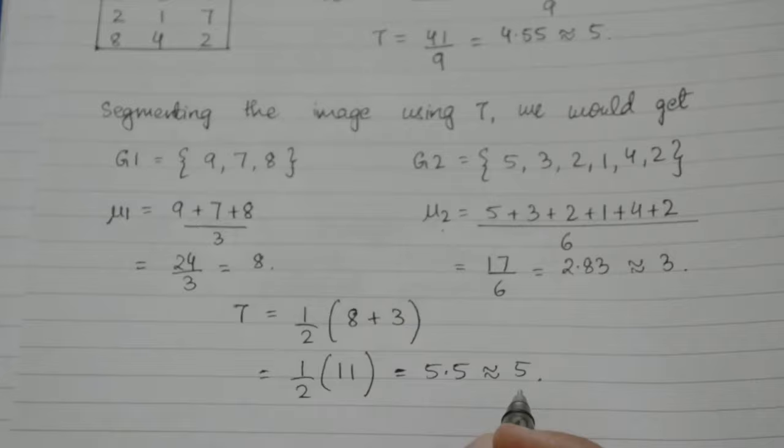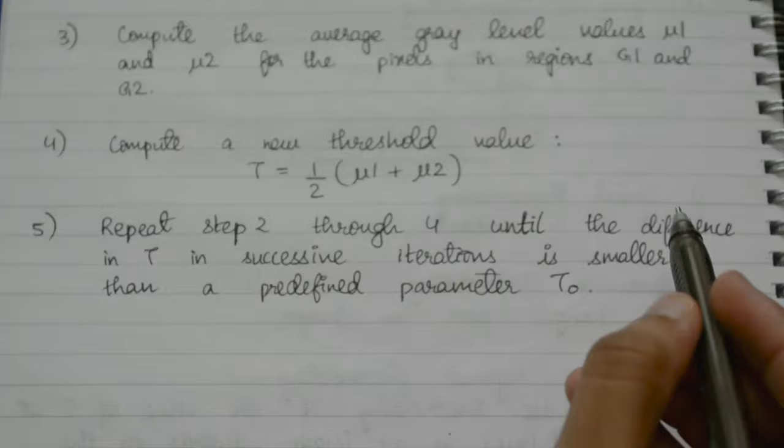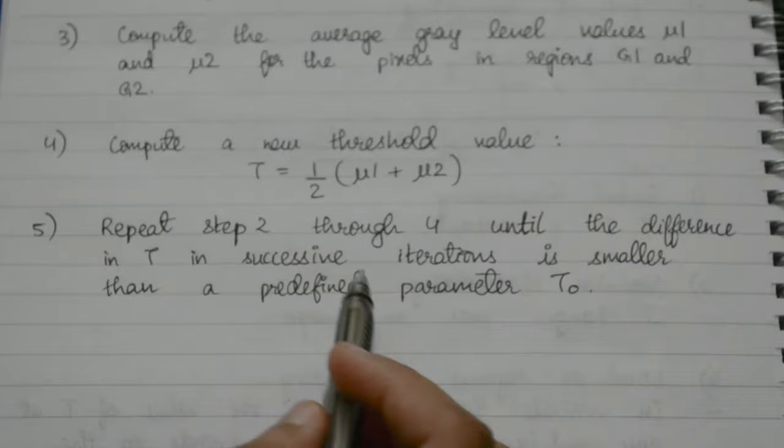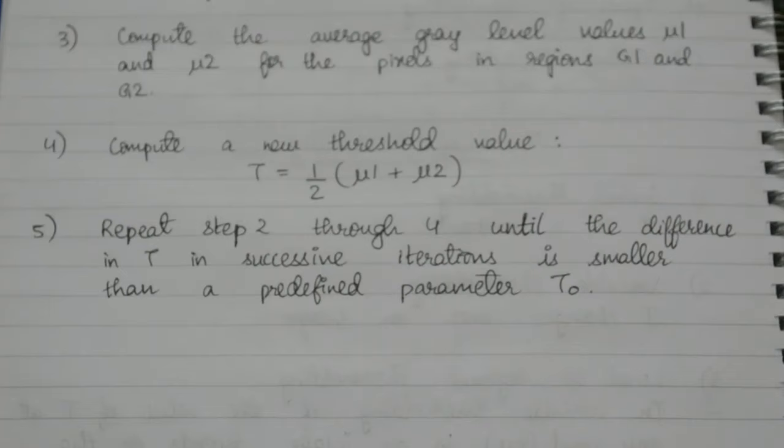In some other examples, this might not always be the case. You need to check for the difference to be minimum. The difference in t in successive iterations must be smaller than the predefined parameter t0, and you continue the iterations until then. So these were the steps for the procedure for global thresholding to obtain t.